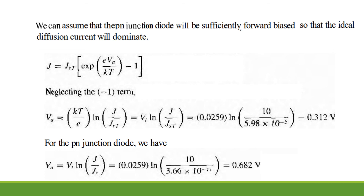We assume the P-N junction diode is sufficiently forward biased so that the ideal diffusion current dominates. The equation is J equal to JST exponential(eVA / kT) minus 1. Neglecting the minus 1 term and rearranging, J/JST equals exponential(eVA / kT). Taking the logarithm, we get the expression for VA as (kT/e) · ln(J/JST), which equals VT · ln(J/JST).